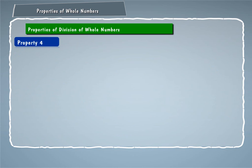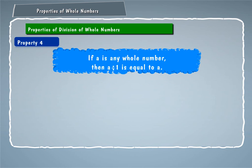Property 4. If A is any whole number, then A divided by 1 is equal to A. For example, 24 divided by 1 gives 24.